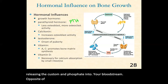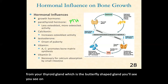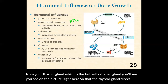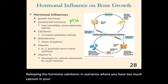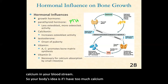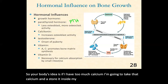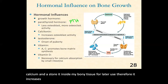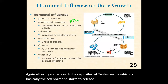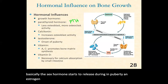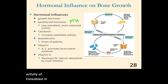Opposite of parathyroid hormone is calcitonin, released from the thyroid gland — the butterfly-shaped gland shown in this picture. The thyroid gland releases calcitonin in scenarios where you have too much calcium in your bloodstream. Your body's idea is: if I have too much calcium, I'm going to take that calcium and store it inside bony tissue for later use. Therefore, calcitonin increases osteoblast activity, increasing bone deposition and allowing more bone to be deposited. Testosterone, which is released during puberty, and like estrogen marks the beginning of the end — it slows down the activity of osteoblasts in the epiphyseal plate, marking the beginning of the end of bone growth.